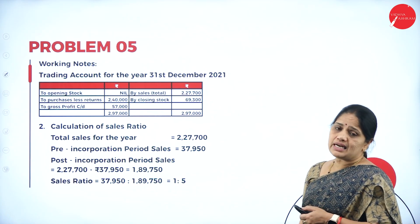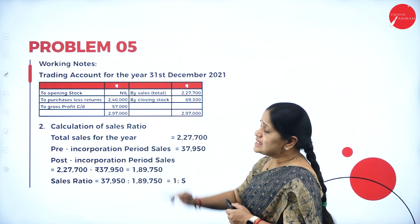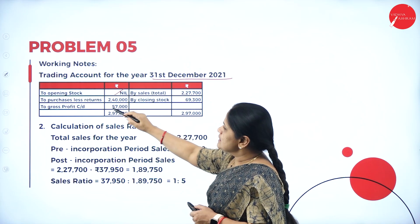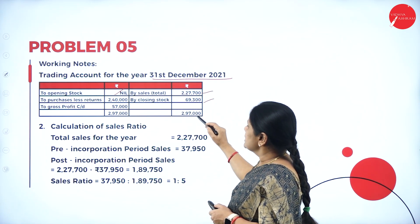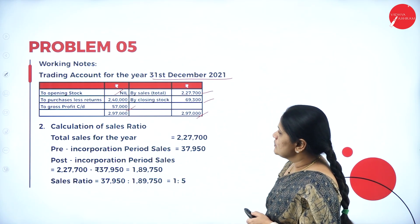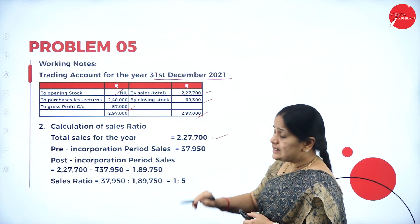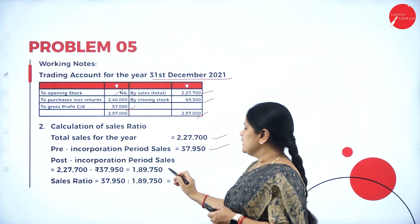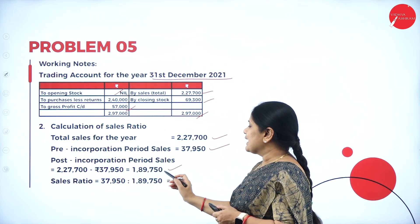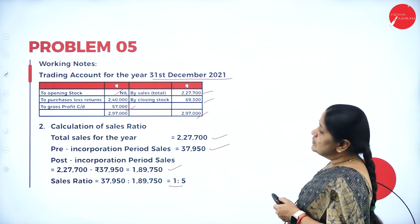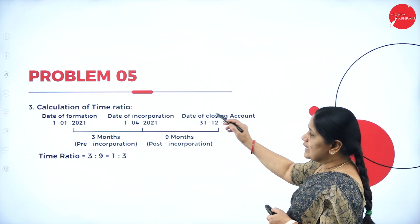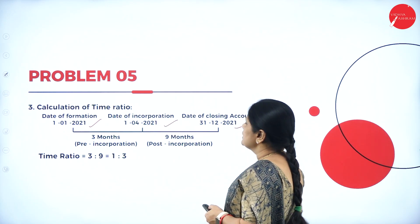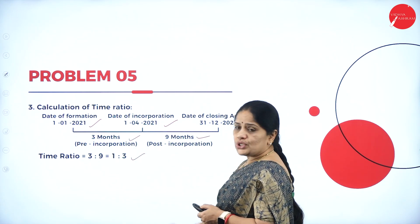In this problem, the gross profit is not given directly, so first we do the trading account for the year ended 31st March 2021. Opening stock is not given, purchases and sales and closing stock are given, and the gross profit works out to 57,000. The sales ratio is clearly given: total sales are 2,27,700, with pre-incorporation sales of 37,950 and post-incorporation sales of 1,89,750, giving a ratio of 1 is to 5. The time ratio is 3 months to 9 months, i.e., 1 is to 3.